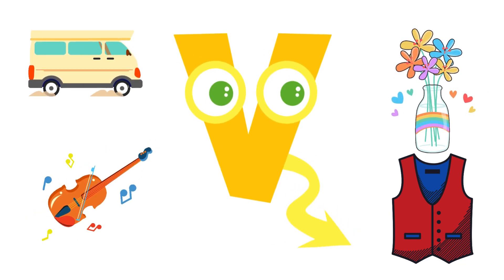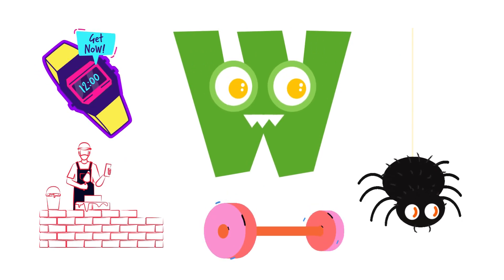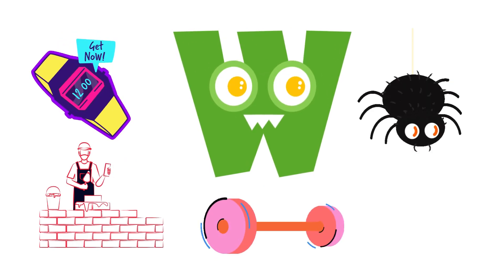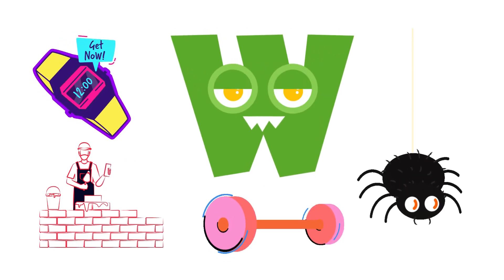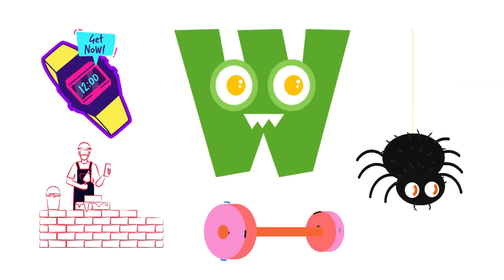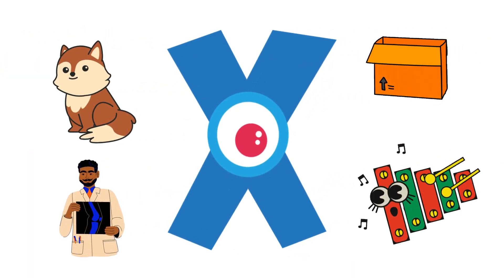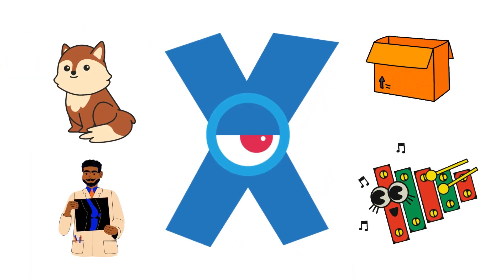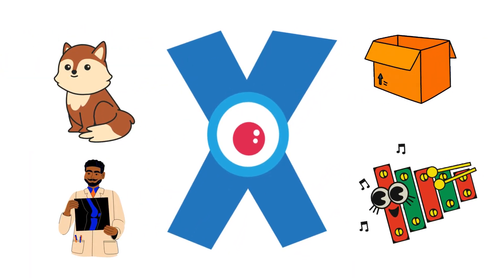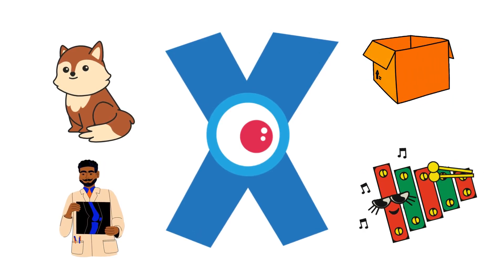violin. W for watch, web, wheel, wall. X for x-ray, fox, box, xylophone.